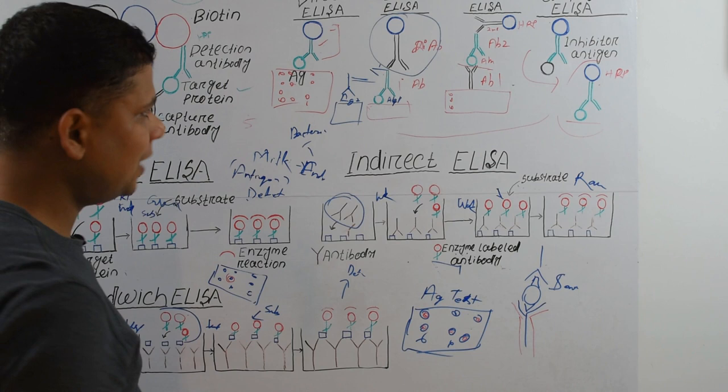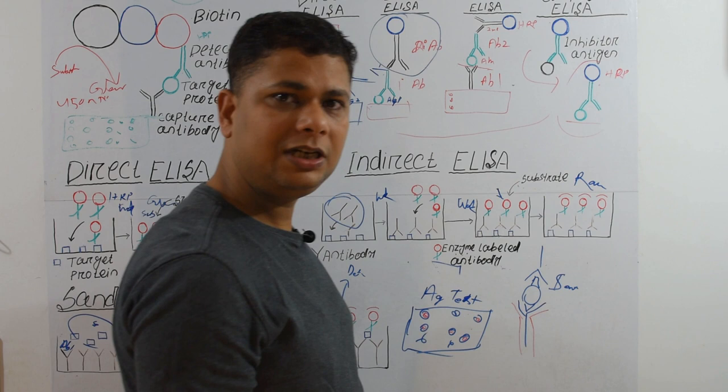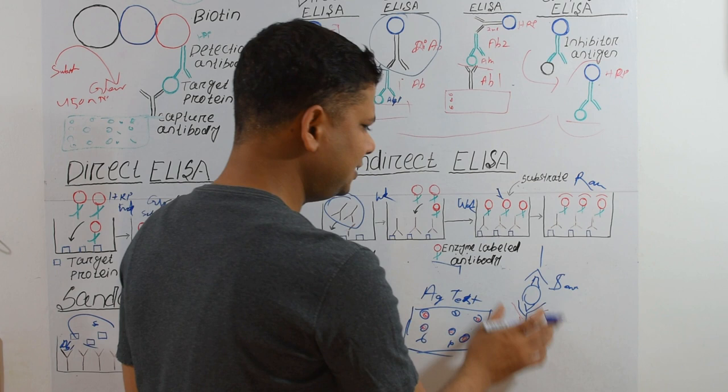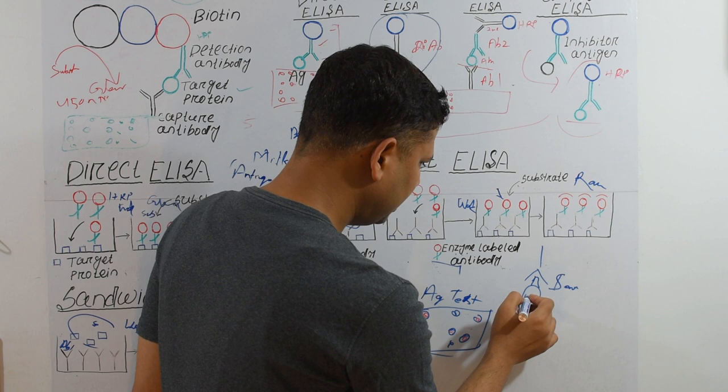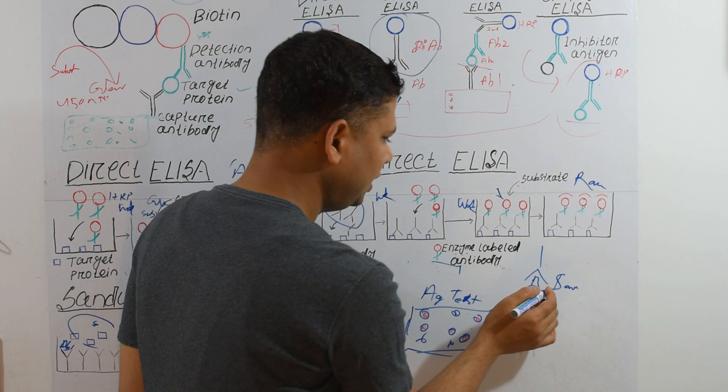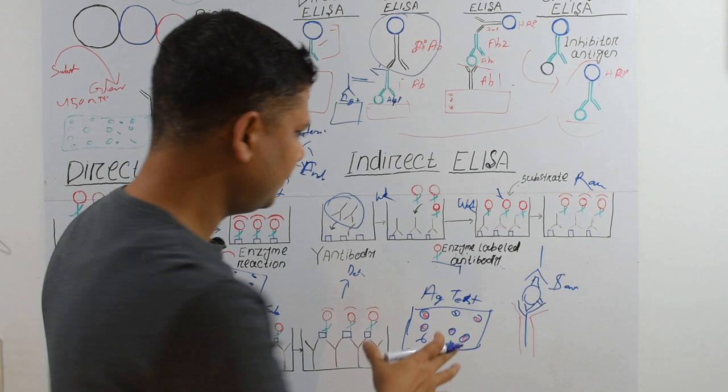The disadvantage of Sandwich ELISA is that we need to select two different antibodies that each recognize different, non-overlapping epitopes. If the epitopes coincide, the second antibody will not bind. Finding such a compatible antibody pair is the most challenging part of this process.